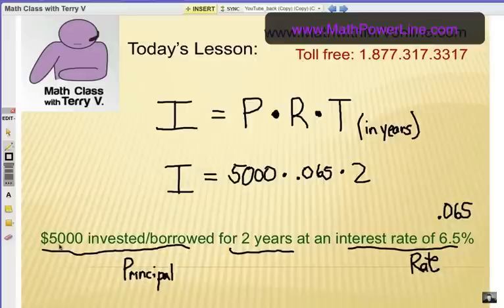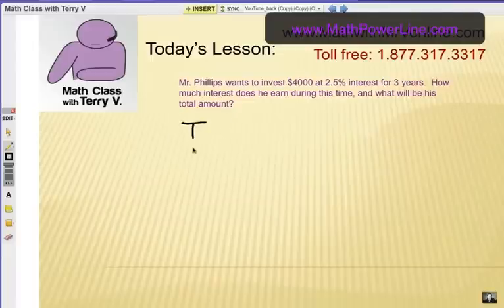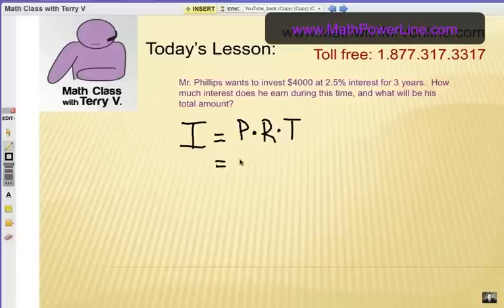Let's go ahead and look at another example. Mr. Phillips wants to invest $4,000 at 2.5% interest for 3 years. How much interest does he earn during this time and what will be his total amount? So first of all, we need to find interest. Remember that's P times R times T.